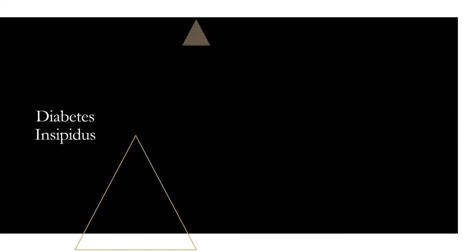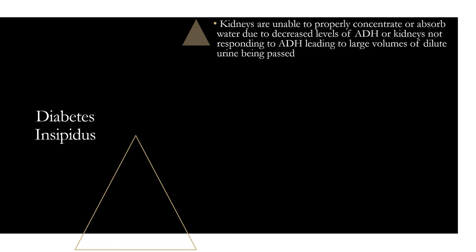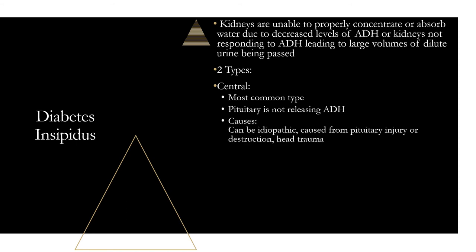Moving on to the opposite end of the spectrum: diabetes insipidus. Where SIADH had too much ADH, diabetes insipidus is the opposite — the kidneys are unable to concentrate or absorb water due to decreased levels of ADH, or the kidneys stop responding to ADH. All of this leads to large volumes of dilute urine being passed. There are two different types: central and nephrogenic.